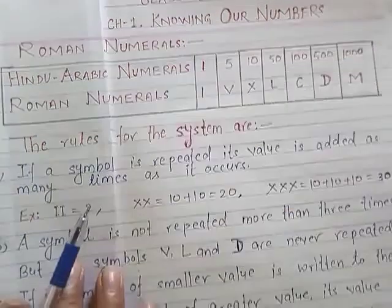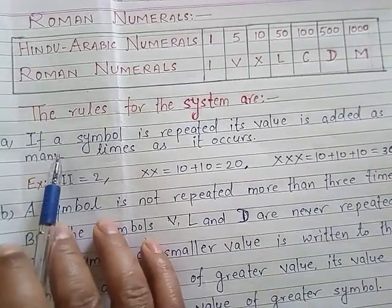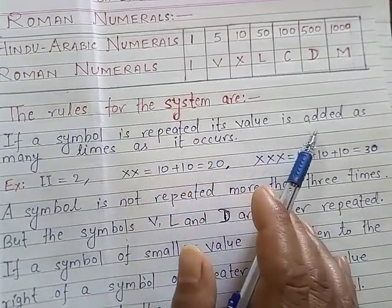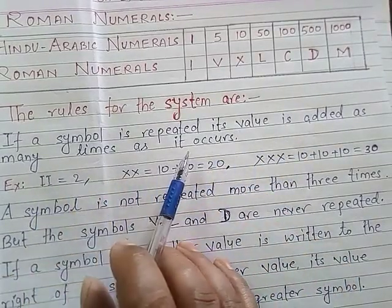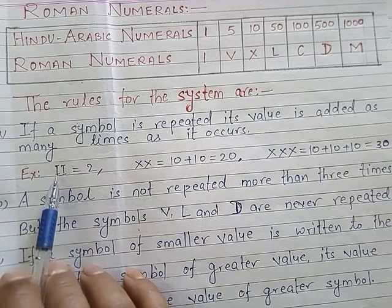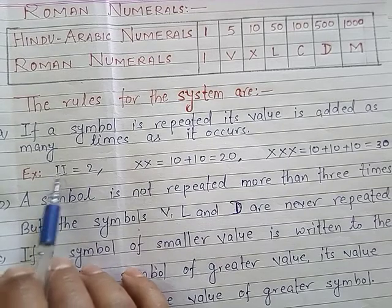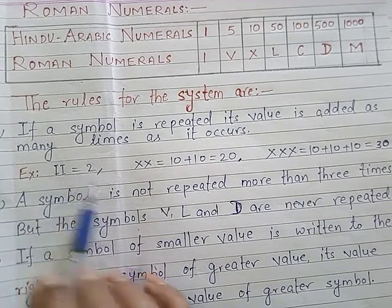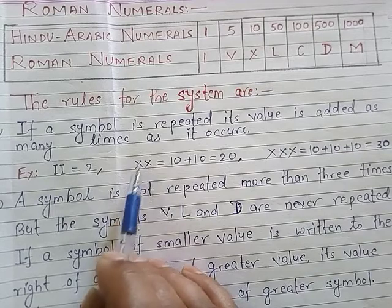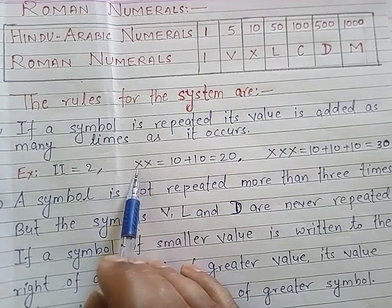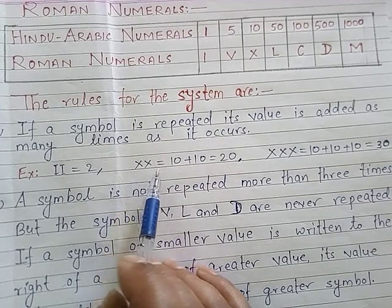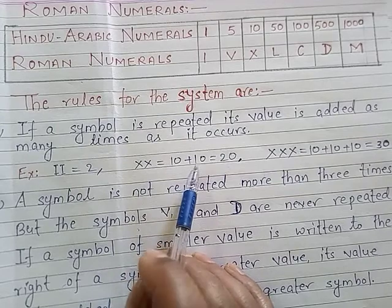Rule number 1: if a symbol is repeated, its value is added as many times as it occurs. For example, I written 2 times is the symbol of 2. X written 2 times means 10 plus 10, which equals 20.